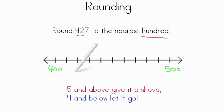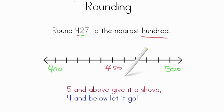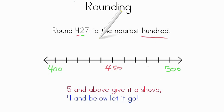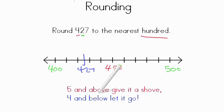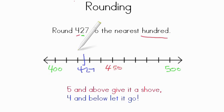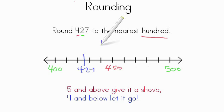Now our midpoint between 400 and 500 is 450 — recognize that 5 right there. It's the midpoint between the two benchmark hundreds. Now we look at 427. 427 is about in the middle here. Remember the motto: 5 and above, give it a shove. 4 and below, let it go. We have 427 — is it above the midpoint or below the midpoint? It's most definitely below the midpoint. So we're going to round down. We're going to go to 400. Rounding to the nearest hundred would be 400.